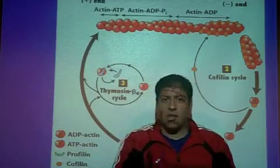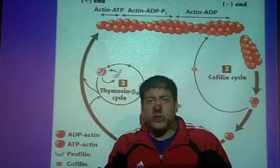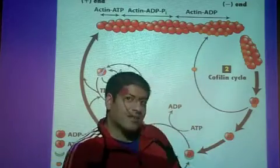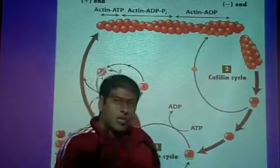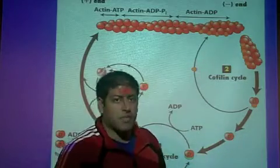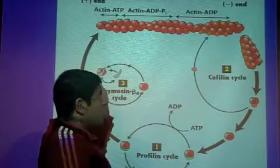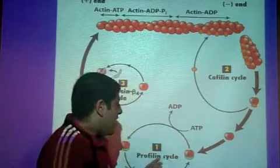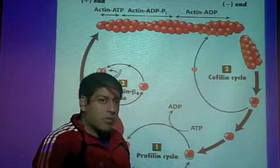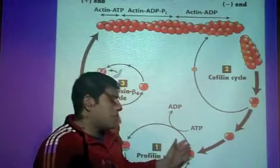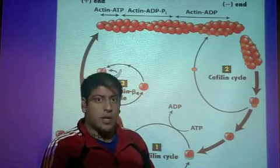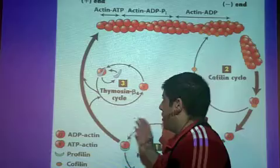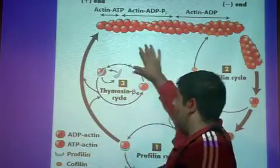This was compared in the live review session to getting into a club or bar. Your G-actins are trying to get into this club — which in this case is your pre-existing actin filament where all the action is happening. The G-actin needs to get dressed up for the club, so profilin helps dress up the G-actin by adding ATP to it. Now when the G-actin is ready to go and all dressed up with the ATP, it makes its way to the club — the pre-existing actin filament.